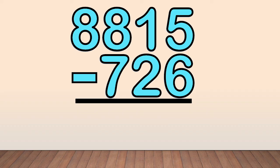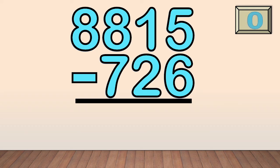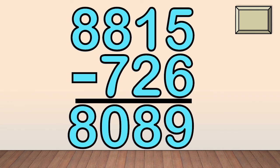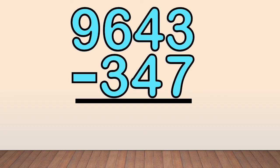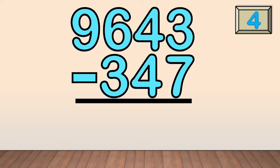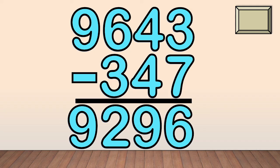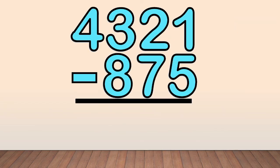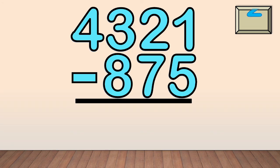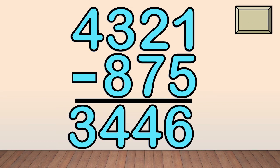8,815 minus 726 — the answer is 8,089. 9,643 minus 347 — the answer is 9,296. 4,321 minus 875 — the answer is 3,446.